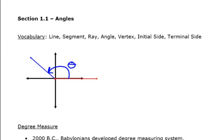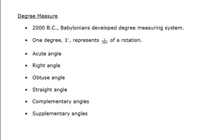Let's actually talk about the degree measure. 2000 BC, Babylonians developed a degree measuring system. One degree represents 1/360th of a rotation. And then we have the various types of angles that I'm sure you're already familiar with. An acute angle is an angle whose measure is between 0 degrees and 90 degrees, not including 90 degrees. So anywhere from 0 to 90 degree angle up to 90, we have an acute angle. If the angle is 90 degrees, we have what's called a right angle.